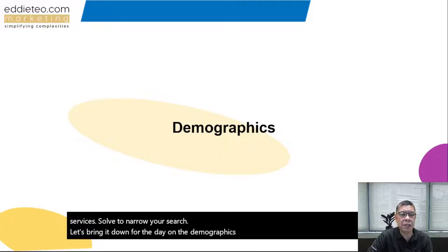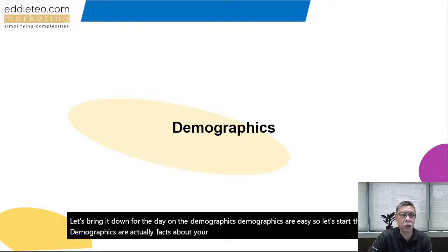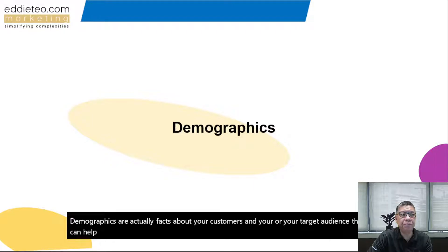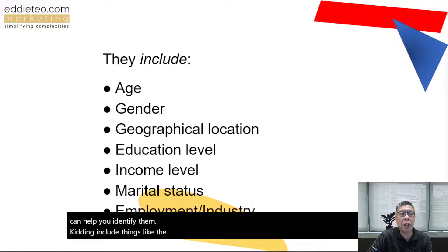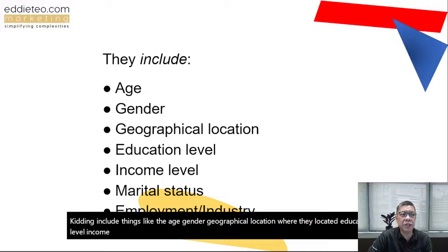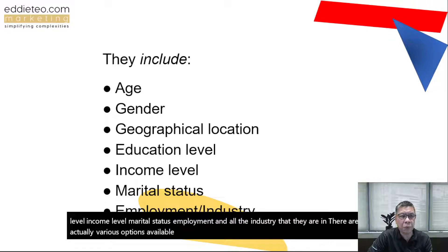Demographics are easy, so let's start there. Demographics are facts about your customers and target audience that can help you identify them. They include things like age, gender, geographical location, education level, income level, marital status, and employment or the industry they are in. Targeting the wrong people means you may end up barking up the wrong tree. For example, if you are only servicing Singapore, it makes no sense to target somebody from America — you'd just be wasting your resources.